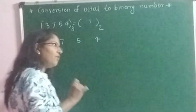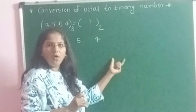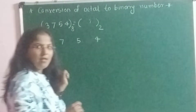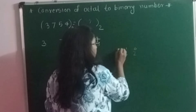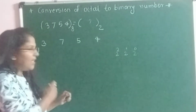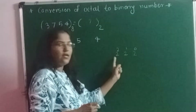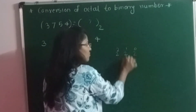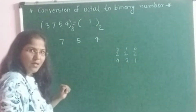Write the first 3 weighted values for the binary number system. The weighted values for the binary number system are 2 raise to 0, 2 raise to 1, 2 raise to 2, 2 raise to 3, 2 raise to 4, and so on. But here I want to consider only 3 weighted values: 2 raise to 0, 2 raise to 1, and 2 raise to 2. Their values are 1, 2, and 4.